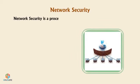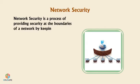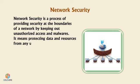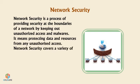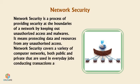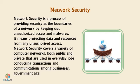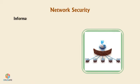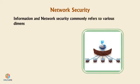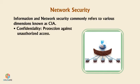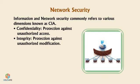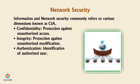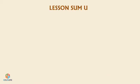Network Security: Network security is a process of providing security at the boundaries of a network by keeping out unauthorized access and malware. It means protecting data and resources from any unauthorized access. Network security covers a variety of computer networks, both public and private, used in everyday jobs, conducting transactions and communications among businesses, government agencies, and individuals. Information and network security commonly refers to three dimensions known as CIA: Confidentiality (protection against unauthorized access), Integrity (protection against unauthorized modification), and Authentication (identification of authorized users).